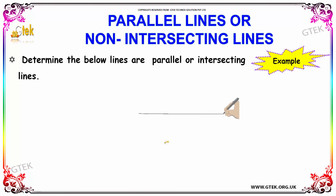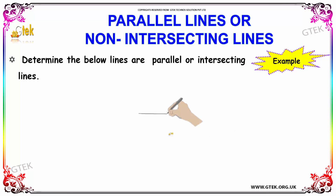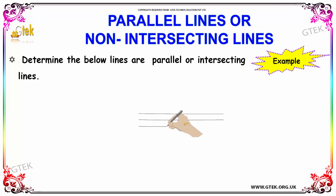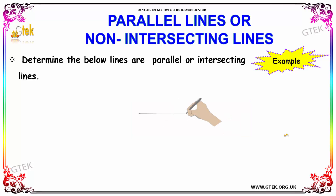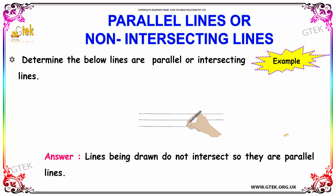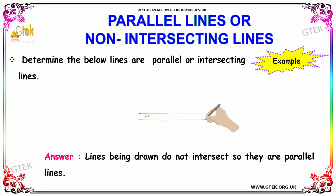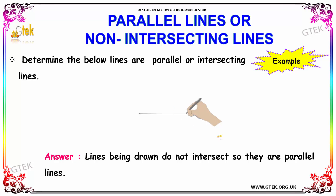Next, we have an example where we have to determine whether the given lines are parallel or intersecting. Looking at the lines drawn, they do not intersect — they do not cross over each other. Hence, they are parallel lines.